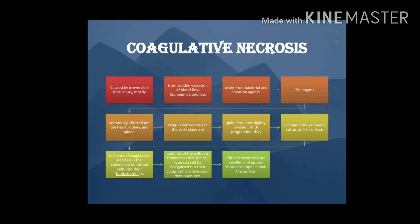Coagulative necrosis is irreversible cell injury caused by sudden cessation of blood flow, or may be caused by a bacterial or chemical agent. The most common organs involved are the heart, kidney, and spleen.